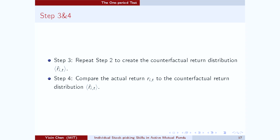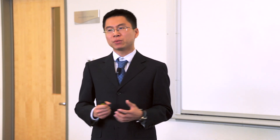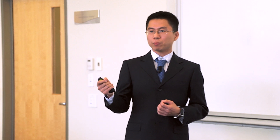The last step is to compare the investor's actual performance to this counterfactual return distribution. First of all, there's a limitation in this approach: by controlling for the characteristics, I can only measure stock picking skills in this exercise, so I have nothing to say about the investor's ability to choose characteristics. But what we gain from this exercise is that we now have the statistical significance of the investor's stock picking ability even in a single period.